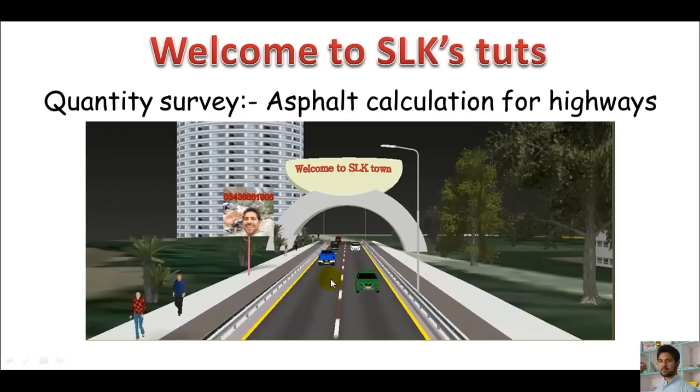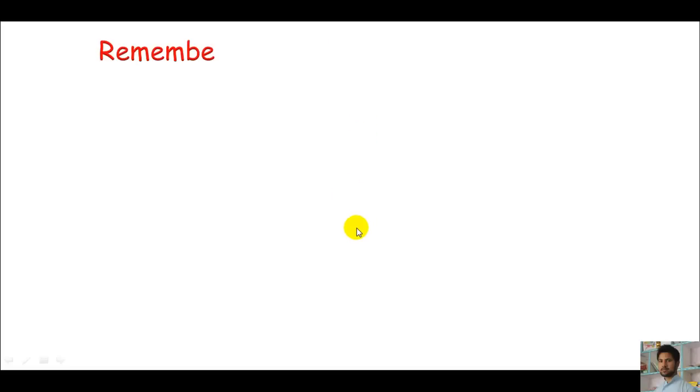For asphalt calculation of this highway, you just need the breadth or width of the highway, the length of the highway with the thickness of highway, and of course you must have a little knowledge about cambers, which is the slope in the transverse direction. To know better about asphalt calculation, just keep a few terms in mind.